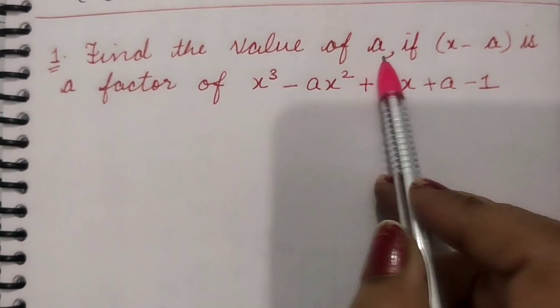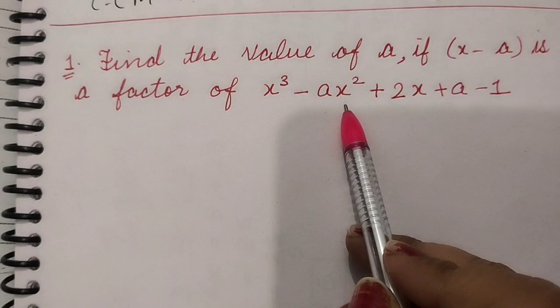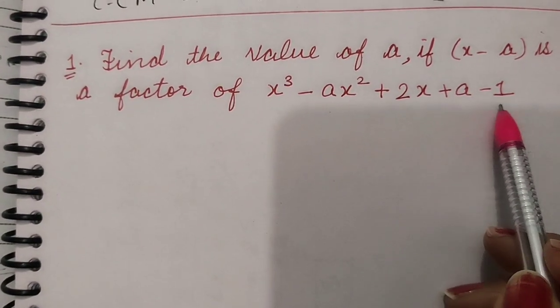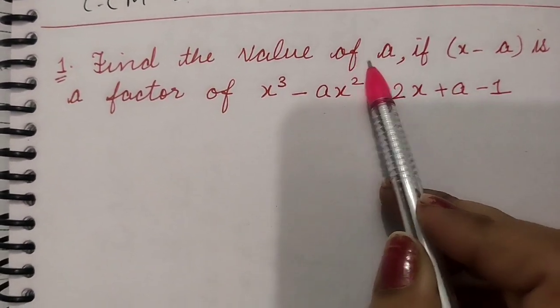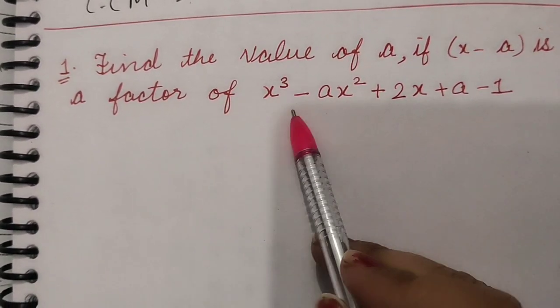Find the value of a if (x - a) is a factor of x³ - ax² + 2x + a - 1. We have to find value a, given that (x - a) is a factor of this polynomial.